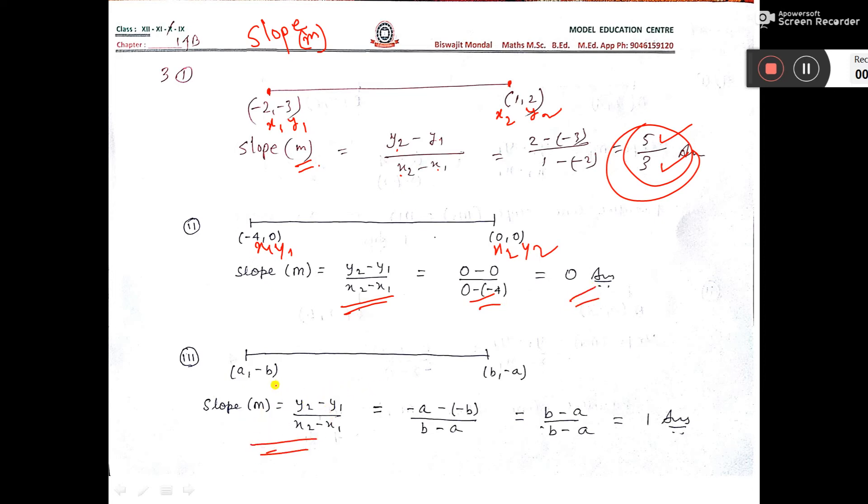Similarly, slope formula you write. This is x1, y1. This is x2, y2. Put the value here. See here, this cancels to only 1. This is the answer.